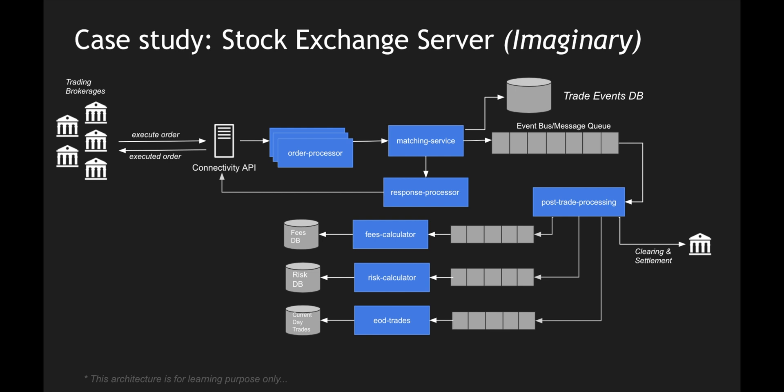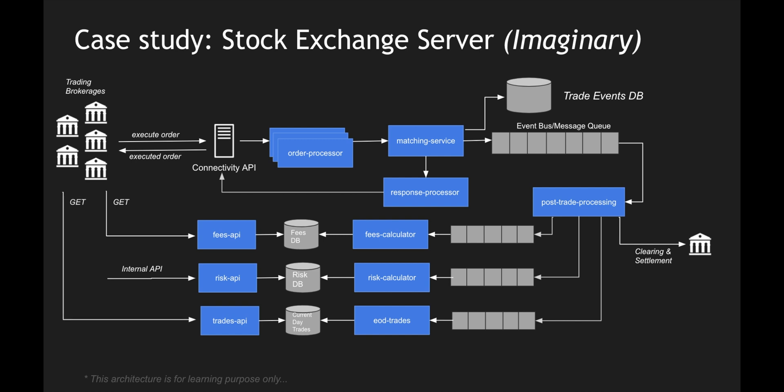We are going to concentrate only on the execution part of the stock market. In addition to persisting all these domains — fees database, risk database, current day trades — we expose some data to the brokerages. We expose a fees API so brokerages can identify how much fees they have to pay. The risk API is internal, consumed by our internal applications for risk calculation. Finally, the trades API exposes current day trades so brokerages can view what trades they executed that day.